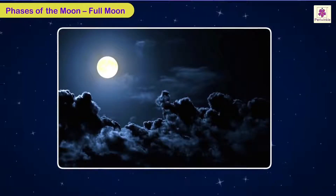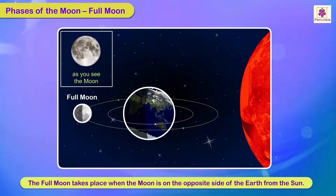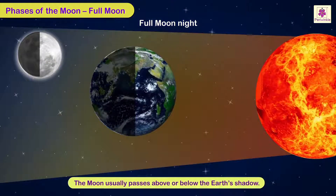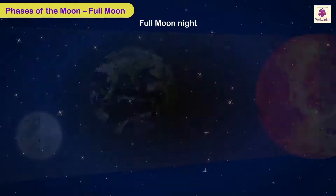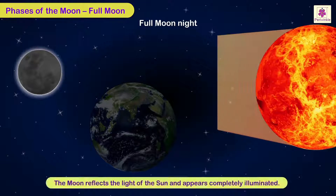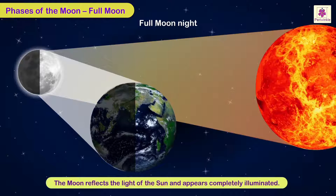Full Moon. The Full Moon takes place when the Moon is on the opposite side of the Earth from the Sun. The Moon usually passes above or below the Earth's shadow, and thus reflects the light of the Sun, thereby appearing completely illuminated.